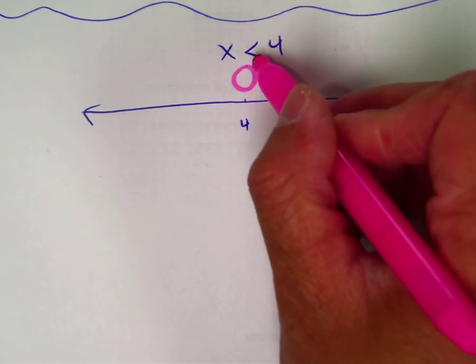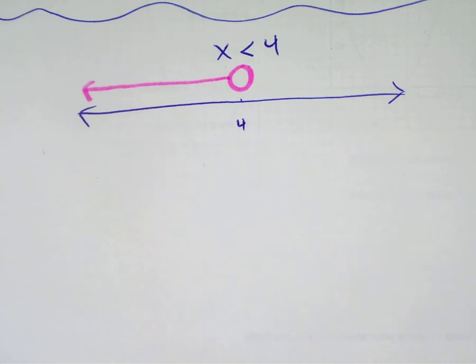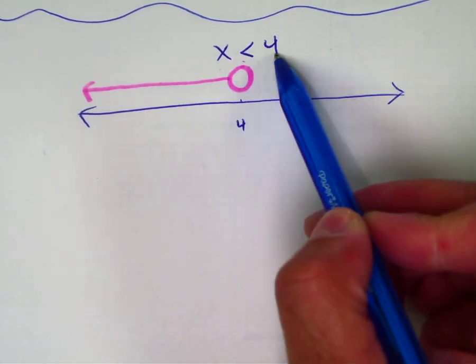The arrow is pointing towards the left. Your variable is on the left. Remember, the mathematical representation is numbers that are smaller than 4.